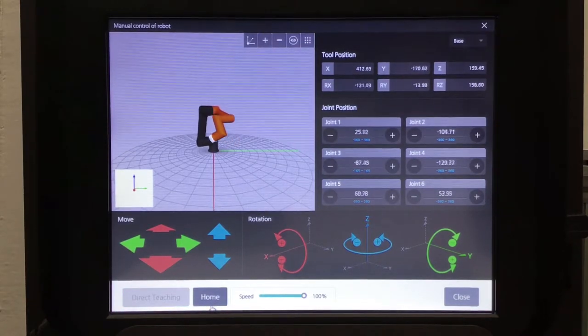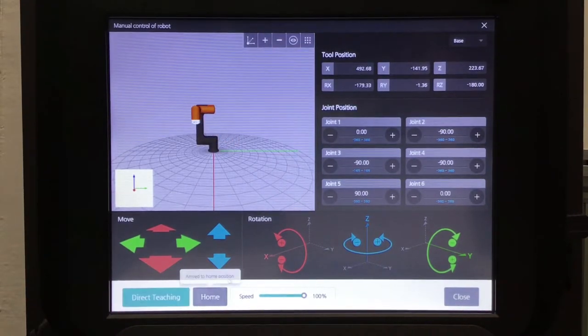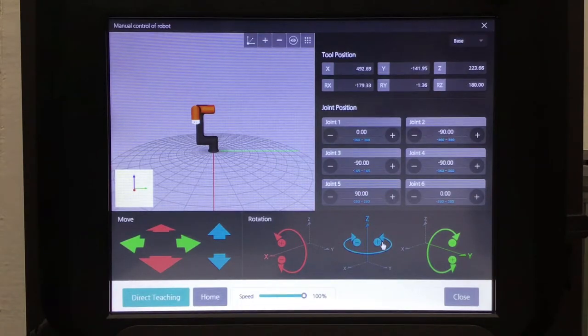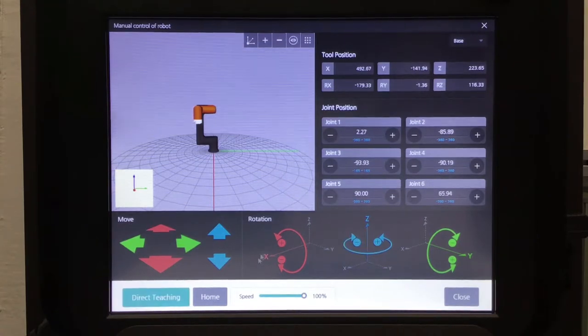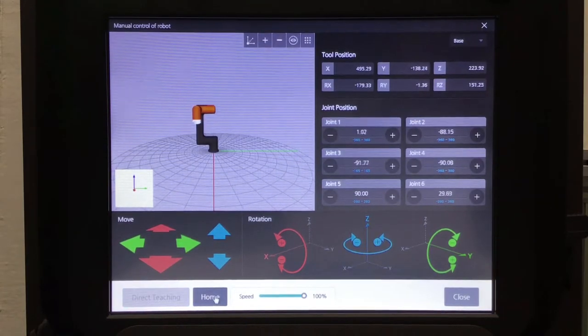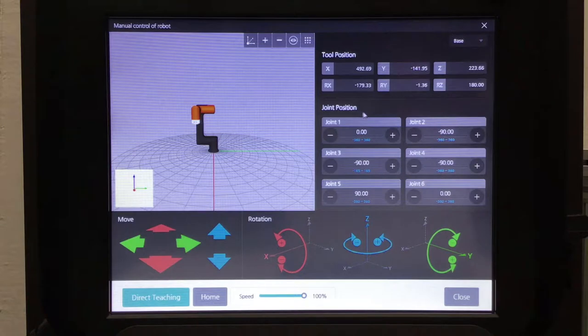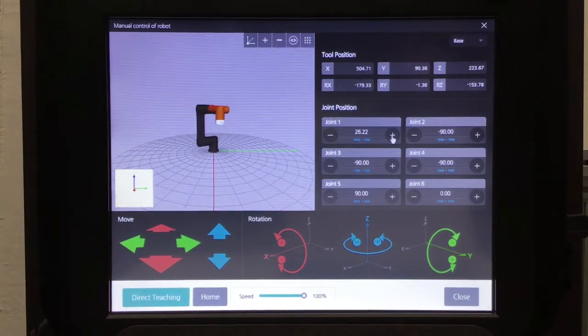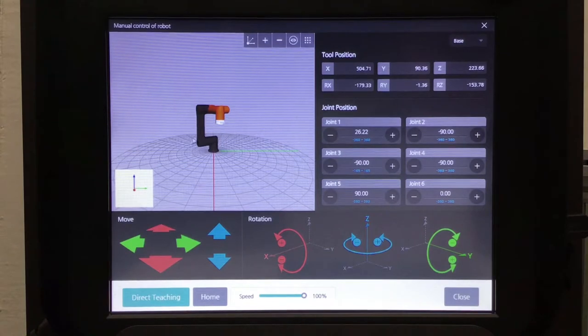Click the home position and return it to its normal state. And the same thing with the z-axis and the y-axis, you can rotate around those as well. You can also move the robot by each individual joint. You can do that by pressing the minus and plus buttons here. If you click plus joint one, it will increase that robot joint to 26.22. It will rotate around and it will only move joint one.